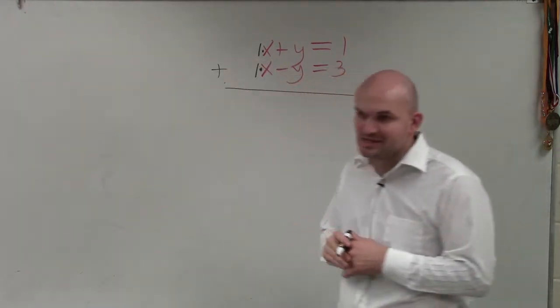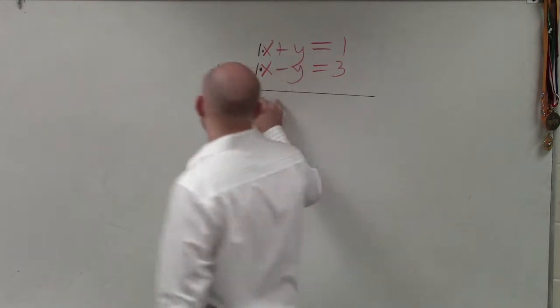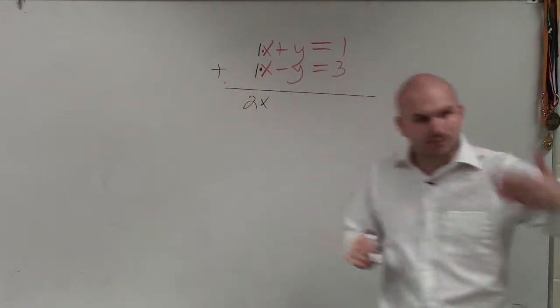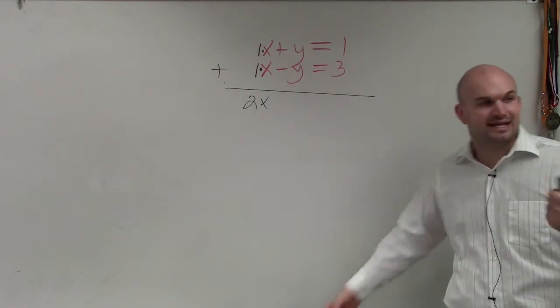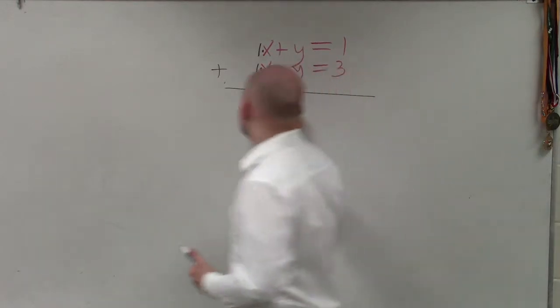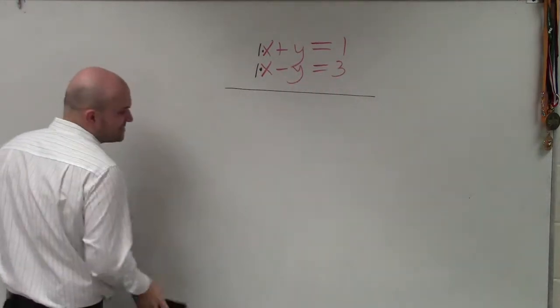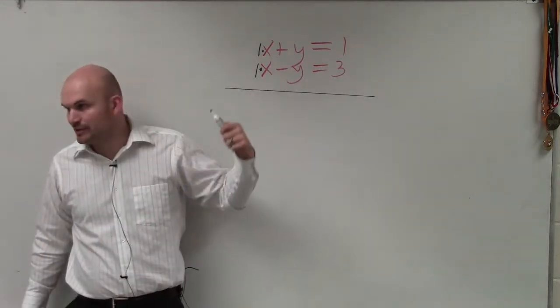But if you guys notice, if I add these two equations, then I'm going to get 2x. Well, that's not what we're trying to do. We're trying to eliminate one of them. By eliminate, I mean get it to 0. So in this case, if I wanted to eliminate the x's, I would subtract my two equations, correct?